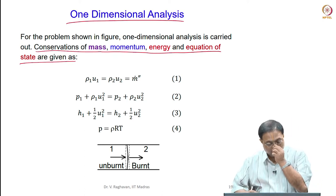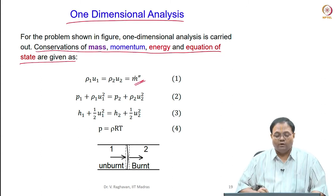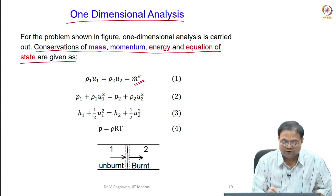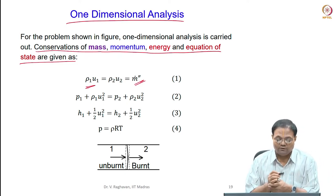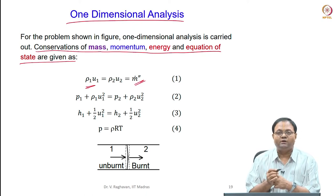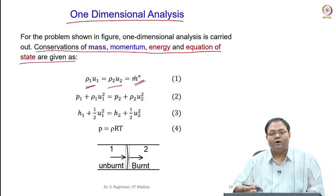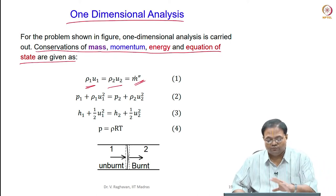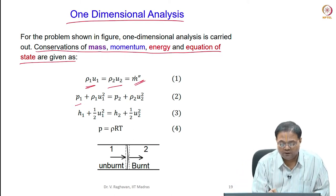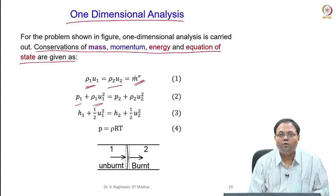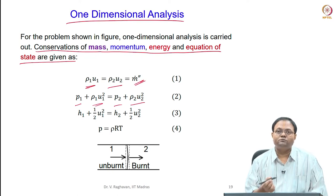What is mass conservation? Per unit area of the duct, what is the mass flux? The mass flux per unit area, m-dot double-dash, is ρ₁u₁ on the left-hand side, where ρ₁ is the unburnt gas density and u₁ is the speed at which it approaches the flame, and ρ₂u₂ on the burnt side. Mass is conserved.